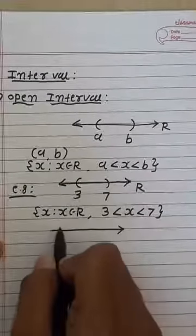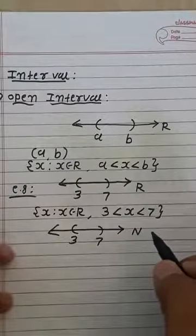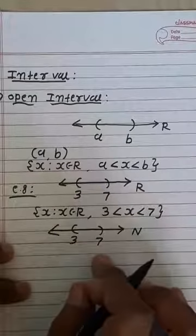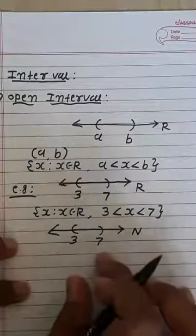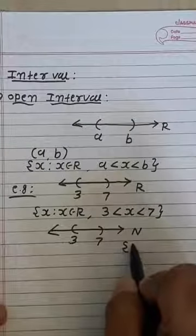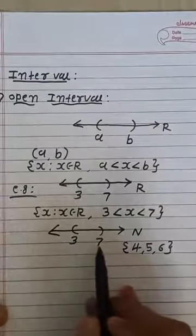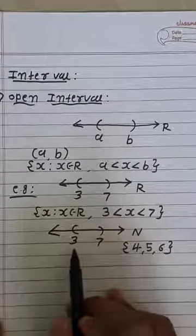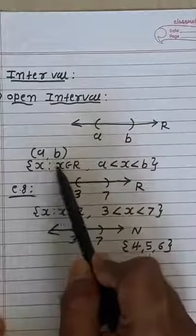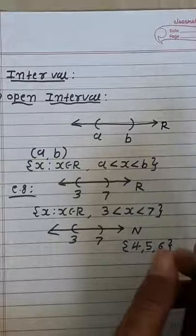Now consider the same example in natural numbers. For open interval (3, 7) in natural numbers, open interval means all numbers between 3 and 7. So the set is {4, 5, 6}. We cannot include 3 and we cannot include 7. So open interval (A, B) = {X | X belongs to R, A < X < B}.